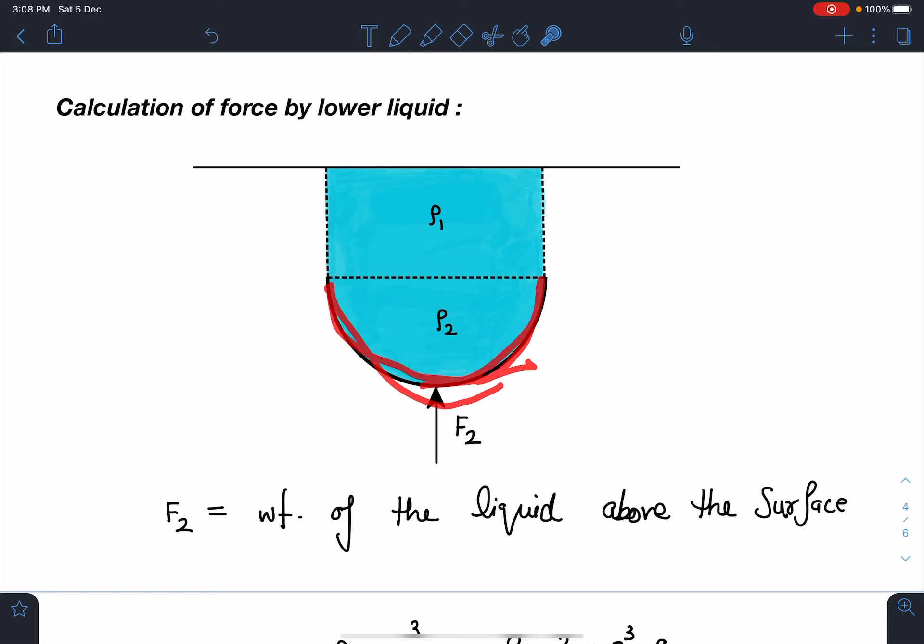Force here, its numerical value is going to be equal to weight of the liquid above the surface. I will write here rho 1 times volume of the cylinder minus rho 2 times volume of this hemisphere multiplied by G. That is going to be the weight of the liquid above the surface.